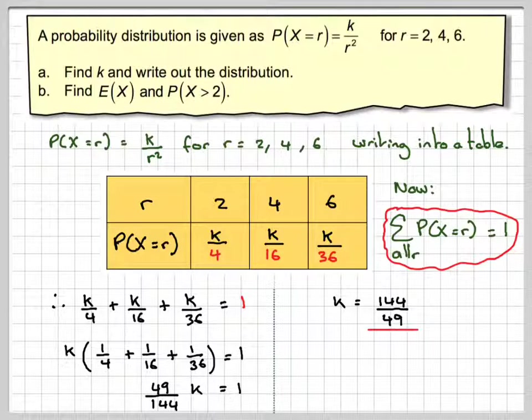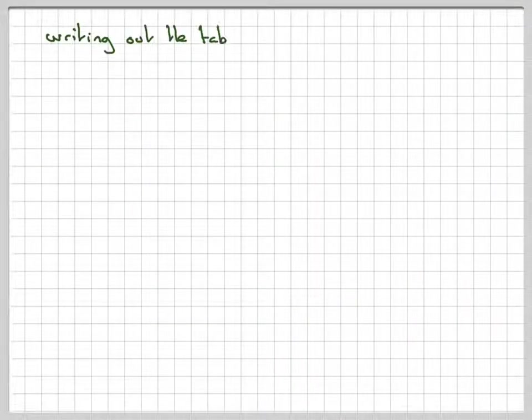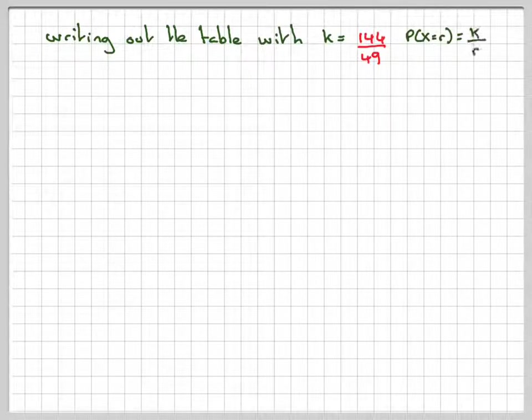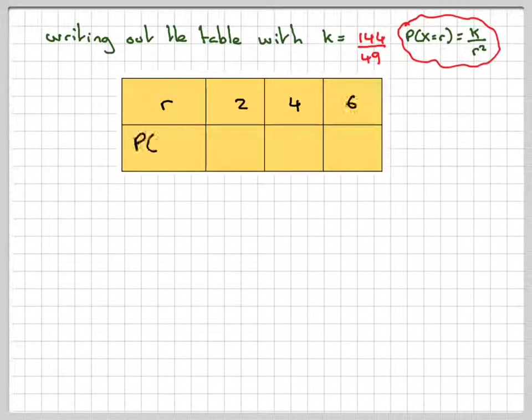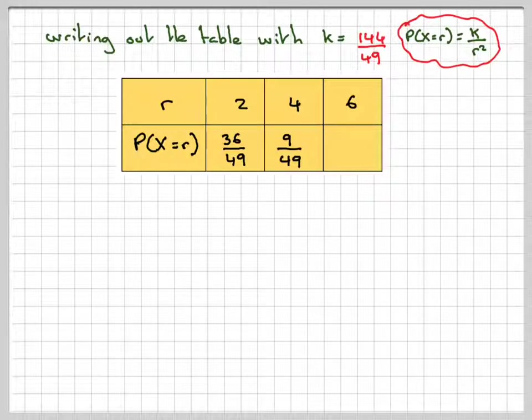Then what we're going to do for the next bit to write out the distribution, instead of writing k/4, we're going to do 144/49 times a quarter. And that gives me 36/49. And then we're going to do 144/49 times 1/16, which gives me 9/49. And then we're going to do 144/49 times 1/36, which gives me 4/49.